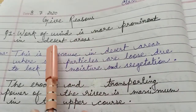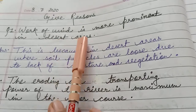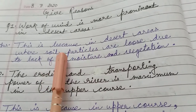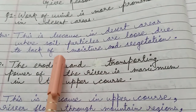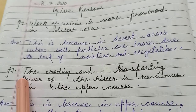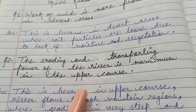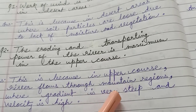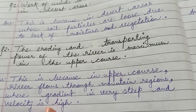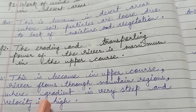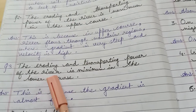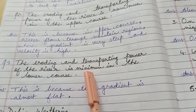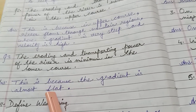Now give reasons for chapter 3. Question number 1: work of wind is more prominent in desert areas. Answer: in desert areas, soil particles are loose due to lack of moisture and vegetation. Question number 2: the eroding and transporting power of a river is maximum in the upper course. Answer: in the upper course, rivers flow through mountain regions where gradients are steep and the speed or velocity of the river is very high. Question number 3: the eroding and transporting power of the river is minimum in the lower course. Answer: the gradient is almost flat. Weathering is the breaking off of rocks on the earth's surface.